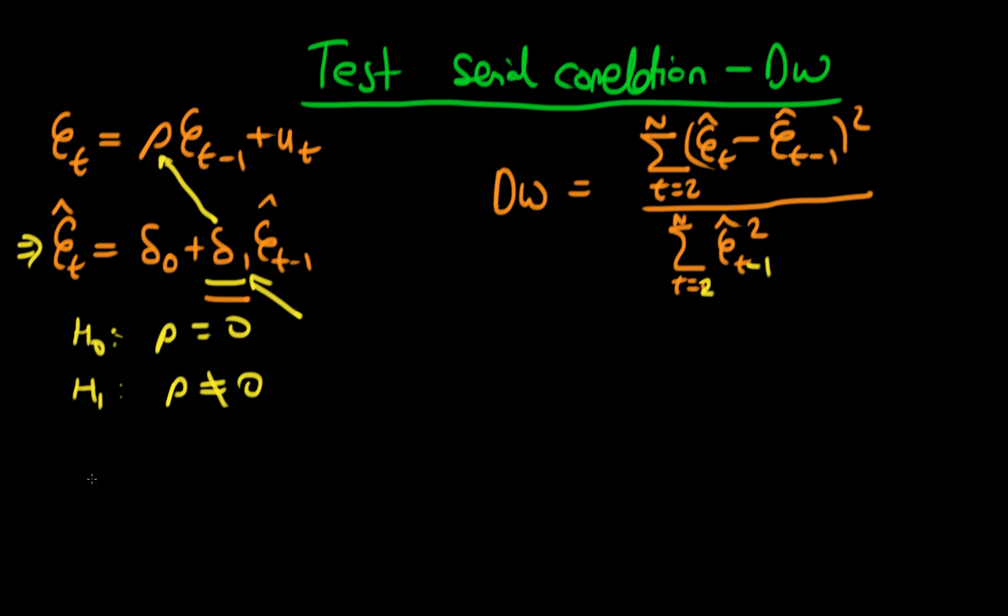It turns out that the Durbin-Watson statistic is approximately equal to 2 times 1 minus delta-1, where delta-1 is our estimate of rho in our sample. So there is some sort of approximate relationship between the Durbin-Watson statistic and what we were doing before, but the analogy isn't absolutely perfect.